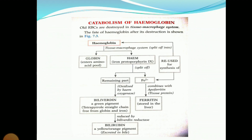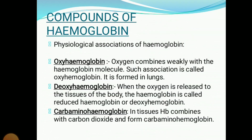Next we come to the components of hemoglobin. We have already heard the terms oxyhemoglobin, deoxyhemoglobin, carbaminohemoglobin, carboxyhemoglobin, and so on. Let us discuss them. First, oxyhemoglobin: oxygen combines weakly with the hemoglobin molecule to form oxyhemoglobin. It is formed mainly in the lungs.